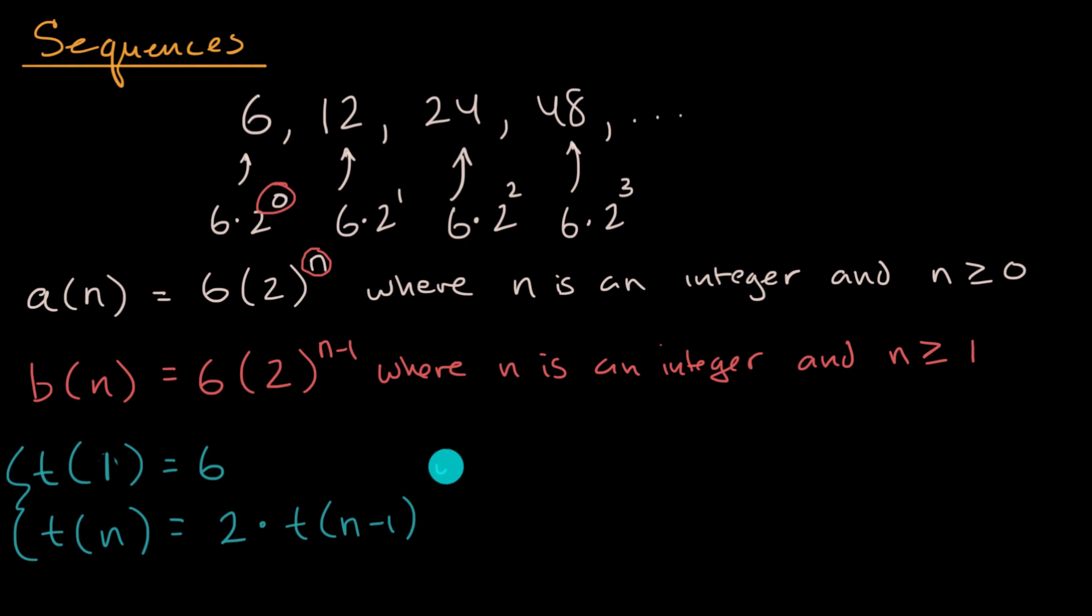But now I would have to write a different domain where n still has to be an integer, and now instead of saying n is greater than or equal to zero, now n is greater than or equal to one.